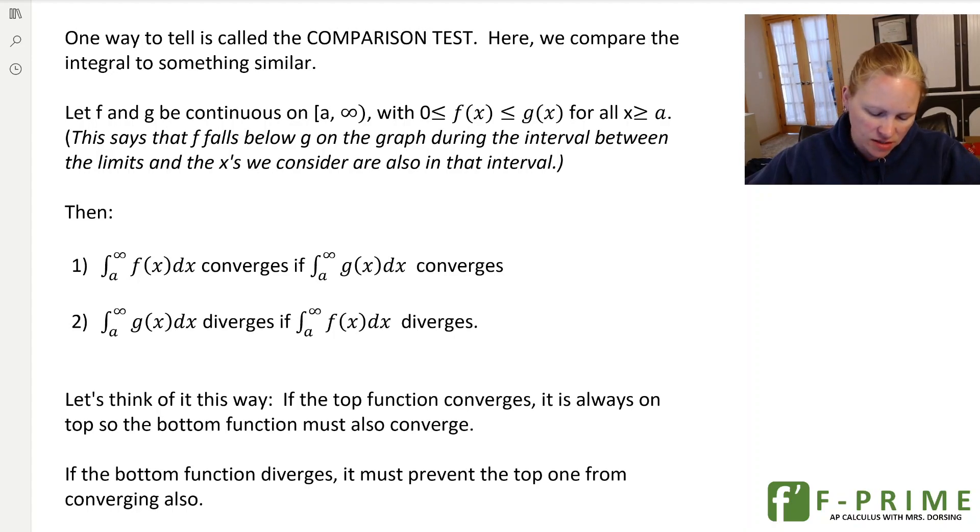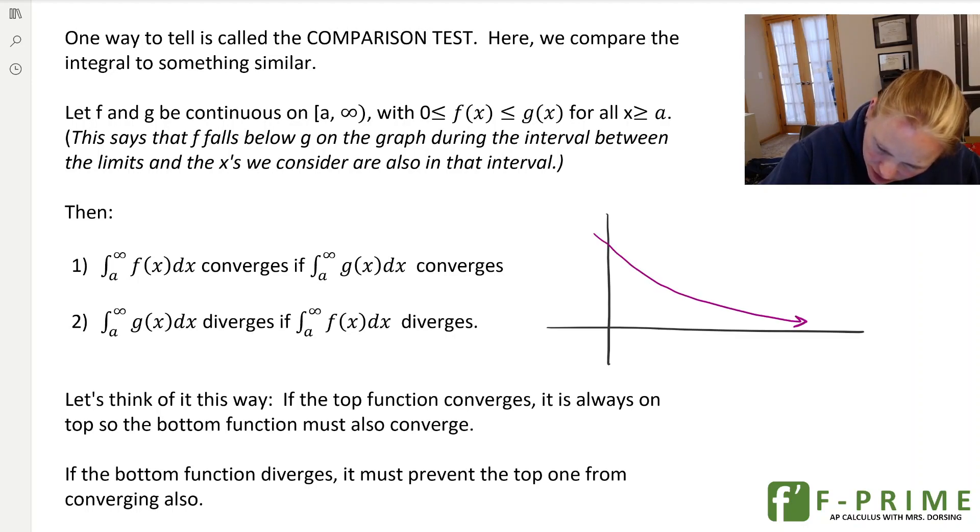And what the comparison test does is it says, hey, if I have two functions that are both continuous and both positive, so they have to be above the x-axis on the graph just for the interval. So like if you're going from 1 to infinity, then from 1 to infinity it has to be above the x-axis. And if you can show that you have a function where maybe you have f(x) kind of going like this, and you have g(x) kind of going like this.